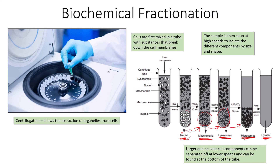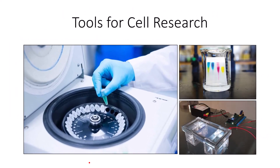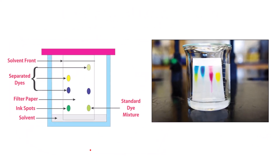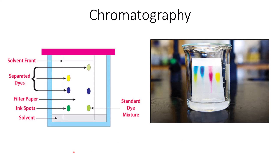This biochemical fractionation or centrifugation is really important for isolating specific organelles for research. You can look at these individual components, investigate individual size and structure, and relate that structure to function. This investigation of cell compartmentalization would not be possible without centrifugation.